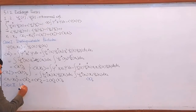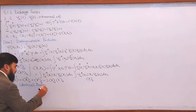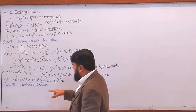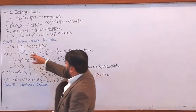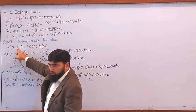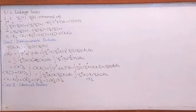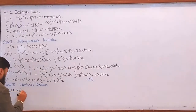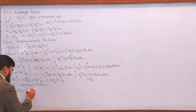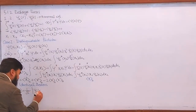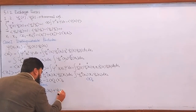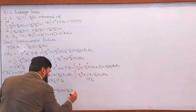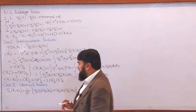Now consider Case 2: identical particles. We will consider bosons first. For bosons, the composite wave function is written as: ψ±(x1, x2) = (1/√2) [ψ_A(x1)ψ_B(x2) + ψ_B(x1)ψ_A(x2)]. The plus sign is for bosons. This is the composite wave function.